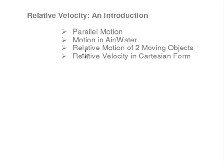The third type of relative velocity questions will be relative motion of two moving objects. This is when we learn how to figure out whether two moving objects moving in different directions will be colliding, or will they be simply crossing each other's path. Lastly, we'll be using what we learn in vectors to solve relative velocity questions in Cartesian form.